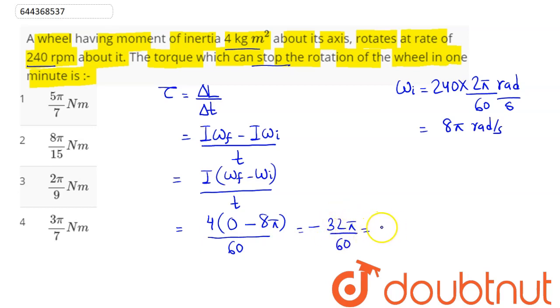So 32 pi divided by 60, this comes here as 4 into 8 and 4 into 15, so minus 8 pi by 15. That is option number, the magnitude of the torque is 8 pi by 15 newton meter, so 2 is the correct